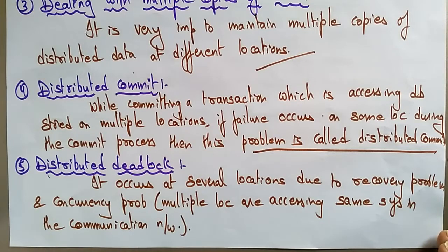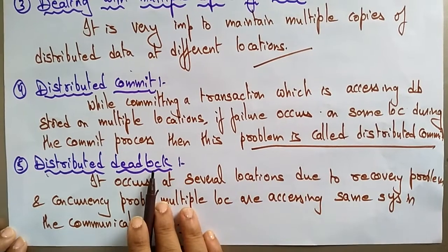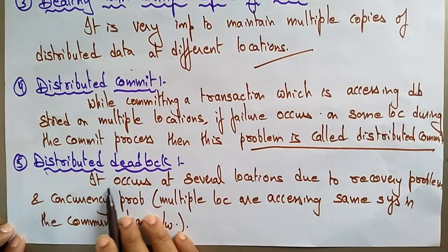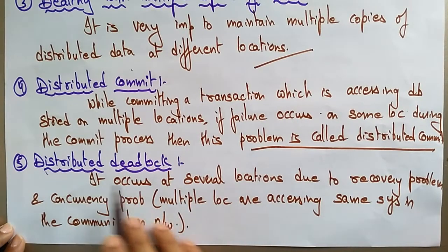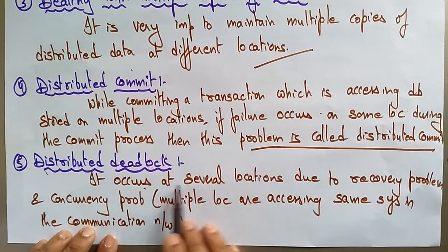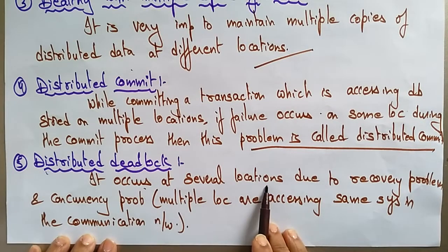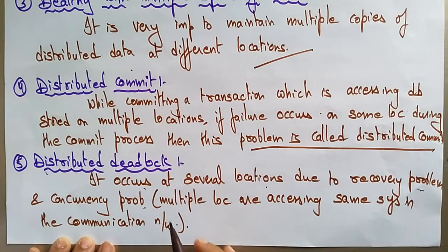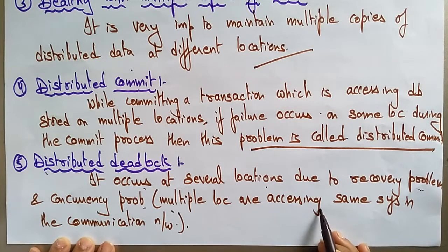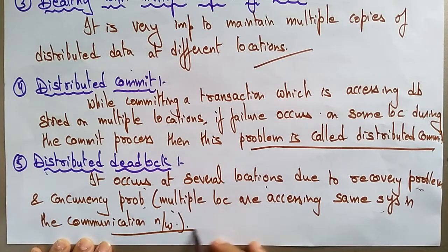Another concurrency problem we can identify is distributed deadlocks. It occurs at several locations due to recovery problems and concurrency problems, meaning multiple locations are accessing the same system in the communication network.